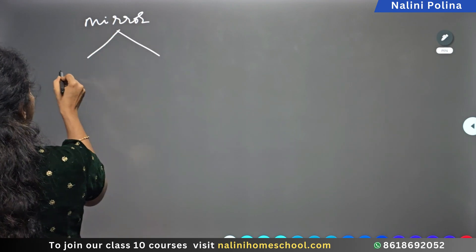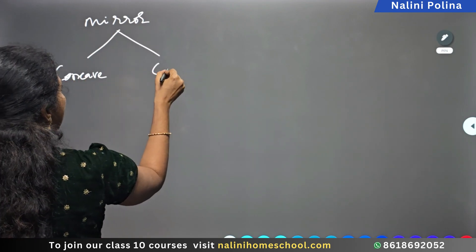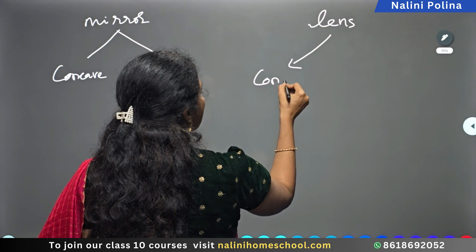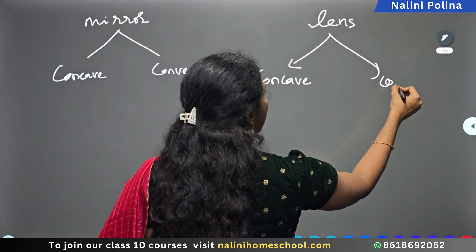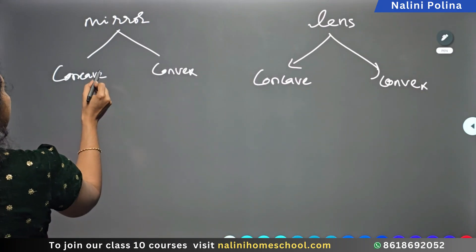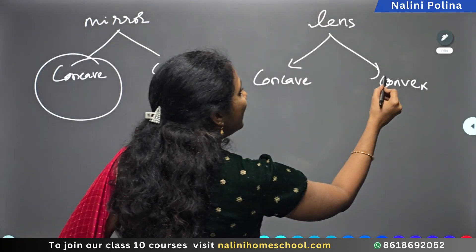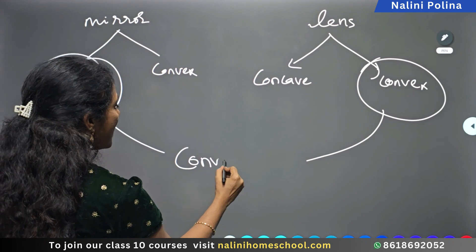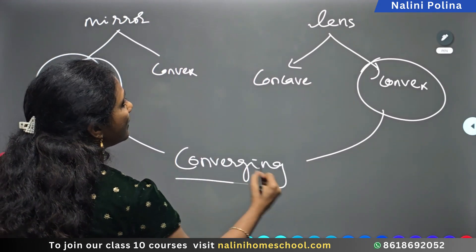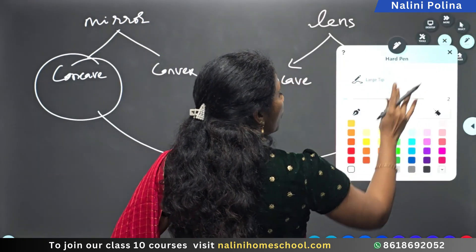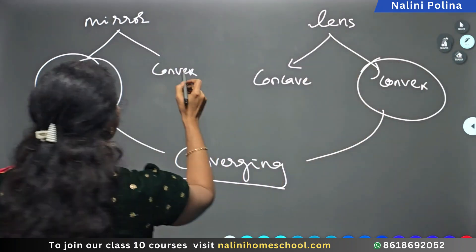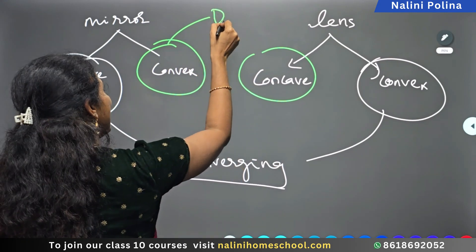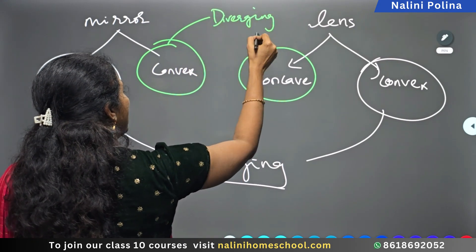We studied two types of mirrors: concave and convex. Lenses also have two types: concave and convex. The concave mirror and the convex lens are both converging in nature — concept-wise they are the same. Whereas the convex mirror and the concave lens are both diverging in nature — they belong to the same type.